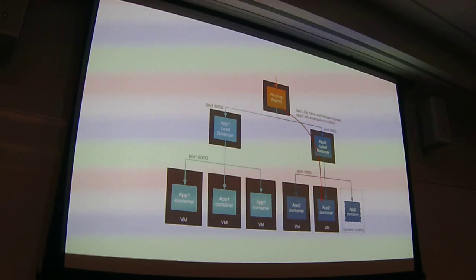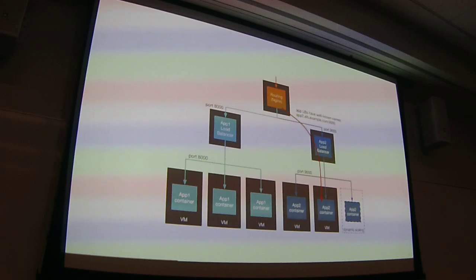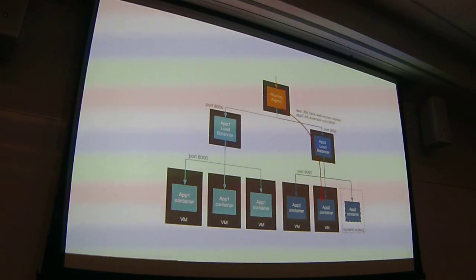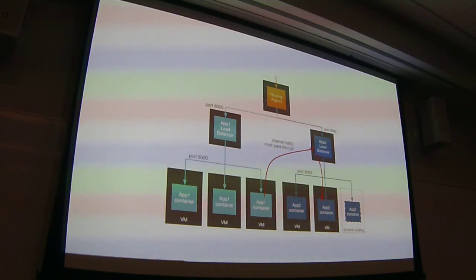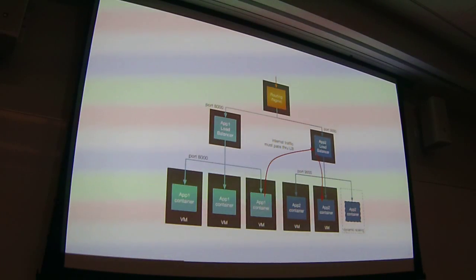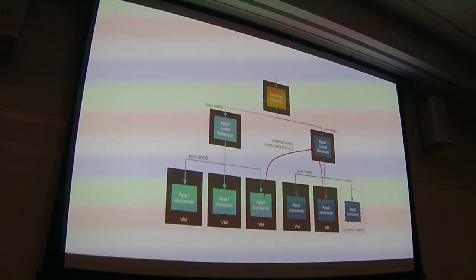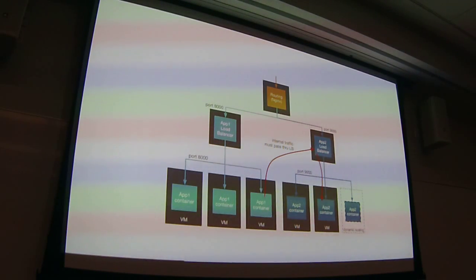One nice thing is that downstream applications like app1 and app2 can just talk to the ELB without needing to know about any of the application nodes behind it. The problem is that the downstream application has to talk to the ELB to find its upstream services, so we have an extra network hop on every internal request. In a network-intensive application — which, if we're being honest, is most web applications — that's going to be a problem.